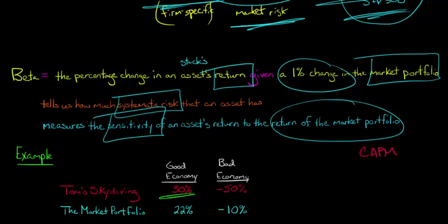And let's say if the economy is good, then Tom Skydiving has a return of 30%. If the economy is bad, then Tom Skydiving has a return of negative 50%. It's really affected big time if there's a problem with the economy. The market portfolio, so that theoretical portfolio of all the firms and all the asset classes, let's say that in a good state of the economy, if the economy is doing well, the market portfolio has a return of 22%. If the economy is doing bad, however, the market portfolio has a return of negative 10%. Now, using just these percentages here, we can go ahead and we can calculate the beta for Tom Skydiving.